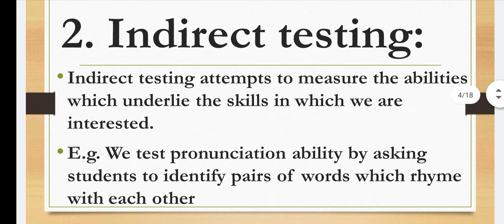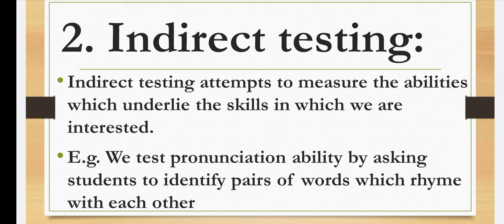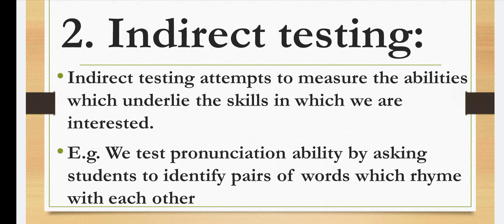Next, indirect testing — as the name suggests, it is the opposite of direct testing. The teacher uses indirect methods or indirect tools for testing. Indirect testing attempts to measure the abilities which underlie the skills in which we are interested. For example, we test pronunciation ability by asking students to identify pairs of words which rhyme with each other. If a teacher wants to know about students' pronunciation, she gives them a stanza and asks which words are rhyming words — if the child correctly identifies the rhyming words, the teacher knows the pronunciation is fine. But since the teacher used rhyming words indirectly to gauge pronunciation, this falls under indirect testing.